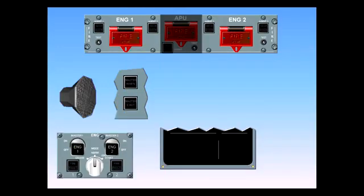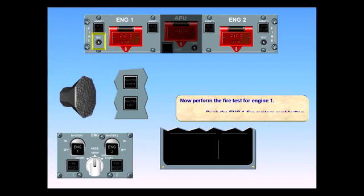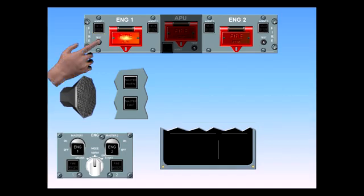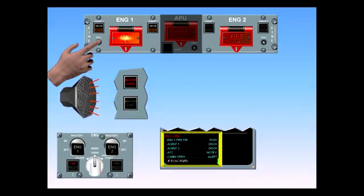Now perform the fire test for engine one. Push the engine one fire system push button. Observe: the engine one fire push button switch illuminates red, squib and discharge lights come on, the master warning light illuminates red, the CRC sounds, the engine one fire warning on the ECAM appears, and the fire light on the engine panel illuminates.